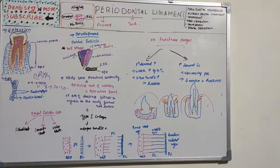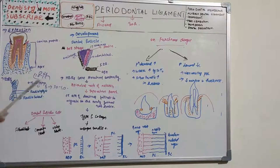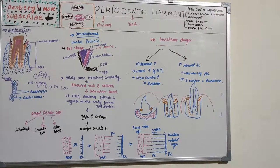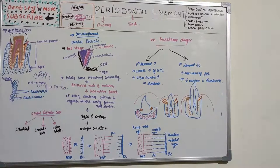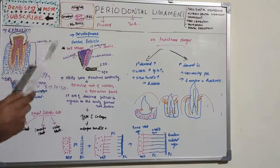Now let's move on to the development of the periodontal ligament. It develops from the dental follicle. Recall from the bell stage of tooth formation: dentine and pulp develop from the dental papilla, while cementum, periodontal ligament, and alveolar bone develop from the dental follicle (dental sac). Development begins with root formation prior to tooth eruption.